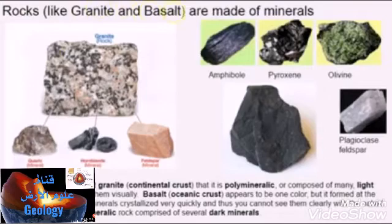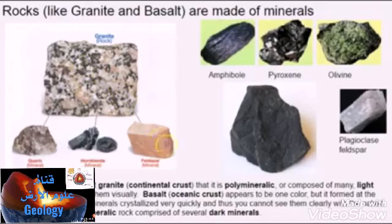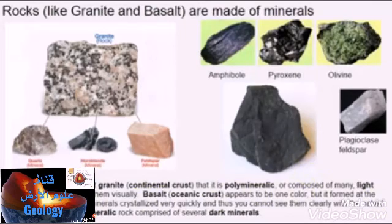Rocks like granite and basalt are made of minerals. Granite — continental crust — is a polymineralic rock; it's obviously composed of many light minerals but also contains some dark minerals. Basalt, or oceanic crust, appears to be one color because it formed at the earth's surface, causing minerals to crystallize very quickly, so you cannot see them clearly with the naked eye. Basalt is a polymineralic rock comprised of several dark minerals.